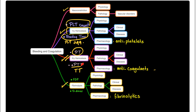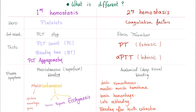Today we'll talk about PT, APTT, and TT. The difference between primary and secondary hemostasis is enormous. Primary hemostasis: the hero is platelets, the result is the platelet plug, tests include platelet count, bleeding time, and platelet aggregometry. Secondary hemostasis: the hero is coagulation factors, the result is the fibrin thrombus, tests are PT, PTT, TT, and serum fibrinogen level — fibrinogen is factor 1.